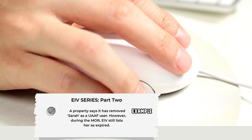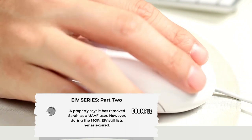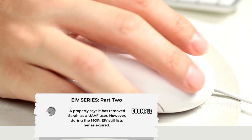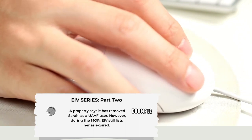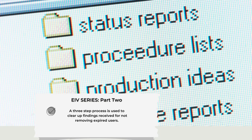For the MOR reviewer, it's the name that will still appear on the HUD certification list. A finding will be given for this. To remove a user that is no longer with the company or no longer needs access to pull the EIV data information from IREMS is a three-step process.